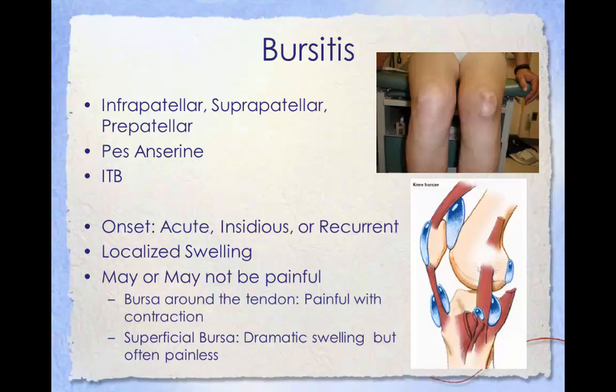Knee bursitis is an inflammation of the bursa located near the knee joint. A bursa is a small, fluid-filled, pad-like sac that reduces friction and cushions pressure points between bones and nearby tendons and muscles. Each knee has 11 bursae; while any can become inflamed, the pre-patellar bursa and the pes anserine bursa are most commonly irritated. Knee bursitis can result from an acute direct blow or from overuse, and can be a recurring injury. Signs and symptoms include warmth, tenderness, and swelling in the affected area, with pain during movement or even at rest. Most causes result from repetitive injuries in jobs requiring a lot of kneeling, so symptoms usually begin gradually and worsen over time.